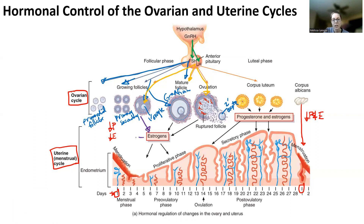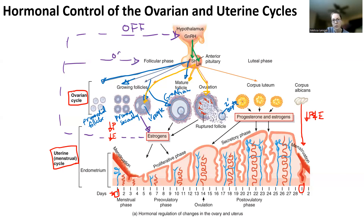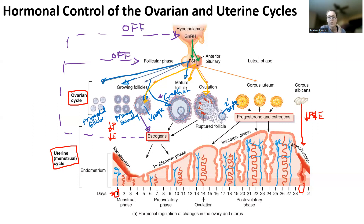Estrogen is going to feed back in two ways. The first way is a negative feedback system. When we have our primary and secondary oocytes and LH is causing the release of estrogen, estrogen negatively feeds back and turns off GnRH, and also turns off FSH and LH. Why? The primary and secondary follicles are getting bigger, but I want to make sure I only have one Graafian follicle. So I'm going to turn off FSH and LH so that only the most mature follicle continues through development.